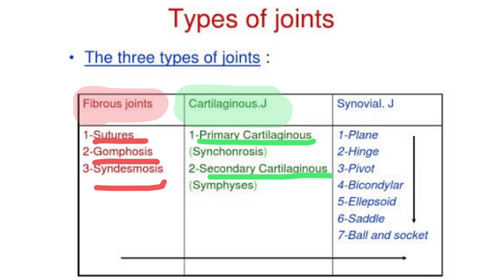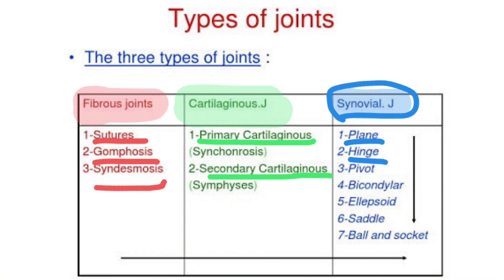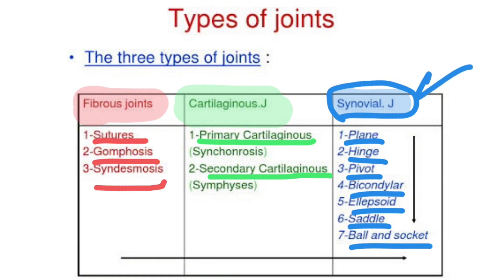The last type of joints are the synovial joints. This is the commonest and most important type of all joints. We have plane joint, hinged joint, pivot, bicondylar, ellipsoid, saddle joint, and ball and socket joint — seven types of synovial joints located throughout our body. This is the main bulk of our lecture and we will study each type separately later on.